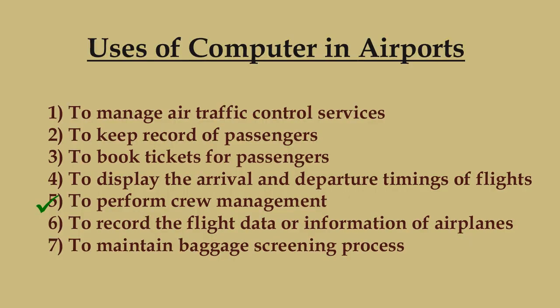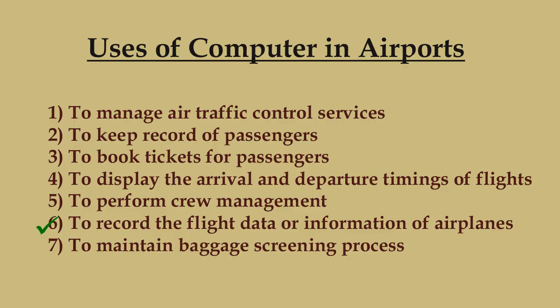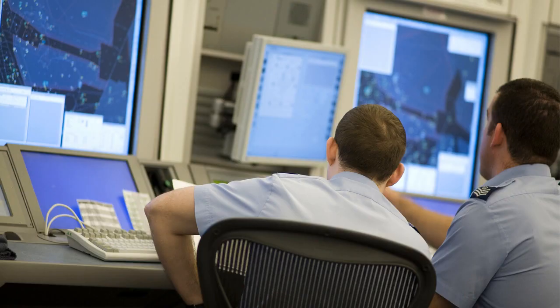Number five, to perform crew management — computers are used by special officers in airports to perform crew management. Like railways, the crew of a flight means the group of persons responsible for the smooth journey of passengers in airplanes. Number six, to record the flight data — special computers are used by special employees of airports to record and save an airplane's flight data or information.